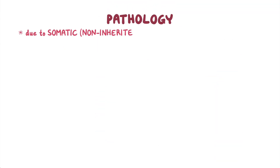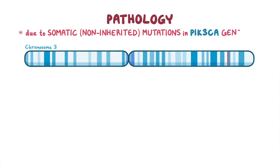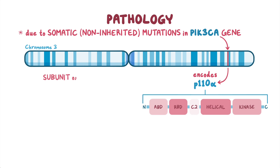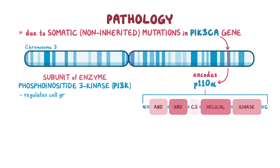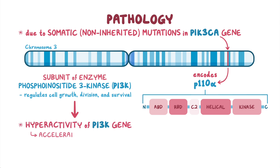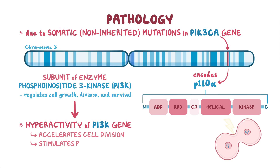PROS is due to somatic, or non-inherited, mutations in the PIK3CA gene, which encodes P110-alpha. This is a subunit of the enzyme phosphoinositide-3 kinase, or PI3K, which regulates cell growth, division, and survival. These mutations result in hyperactivity of PI3K, which accelerates cell division and stimulates the production of growth factors and hormones, contributing to tissue overgrowth.